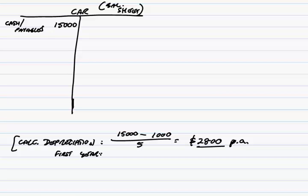In the first year, although it's 2,800 a year, we only owned it for half a year. We only bought it on the 1st of January and our year end is 30th of June. And so we'll take 6 twelfths — half of the 2,800. In the first year it'll only be 1,400.